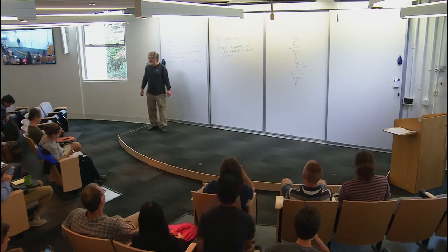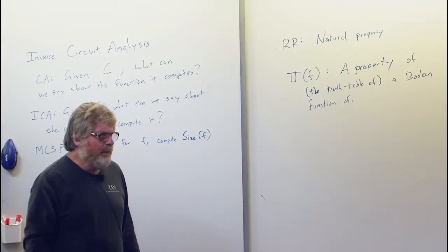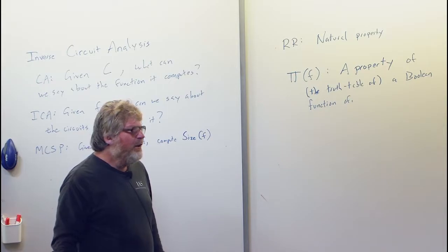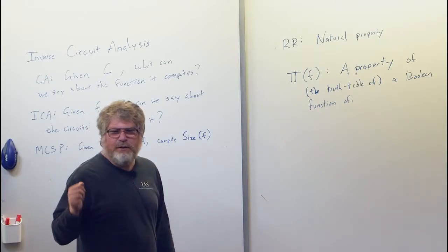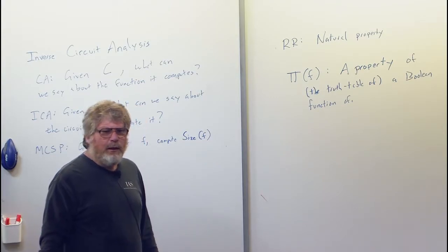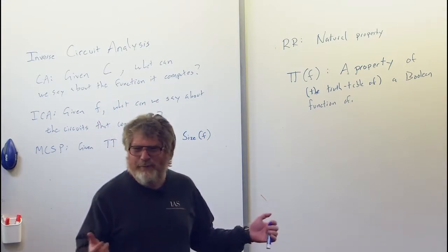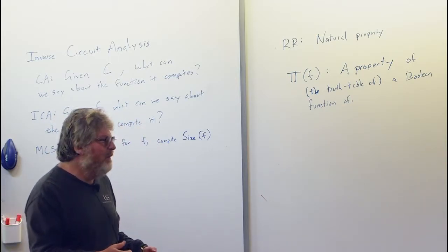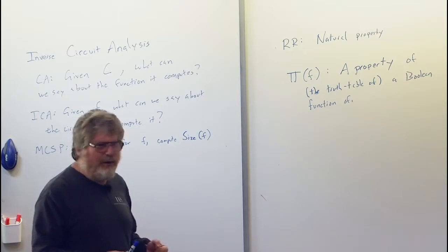I'm going to begin by elaborating on something that Ryan said yesterday. We're looking at the connections between lower bounds and algorithms, particularly the connections between proving circuit lower bounds and derandomization. But I'm going to make a little digression: when we look at algorithms involving circuits, we can group them into two categories, which is kind of implicit in what Ryan was talking about yesterday.